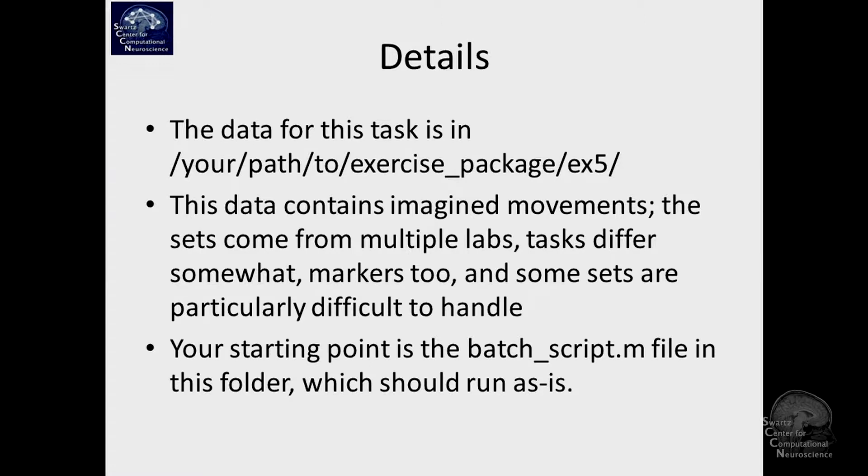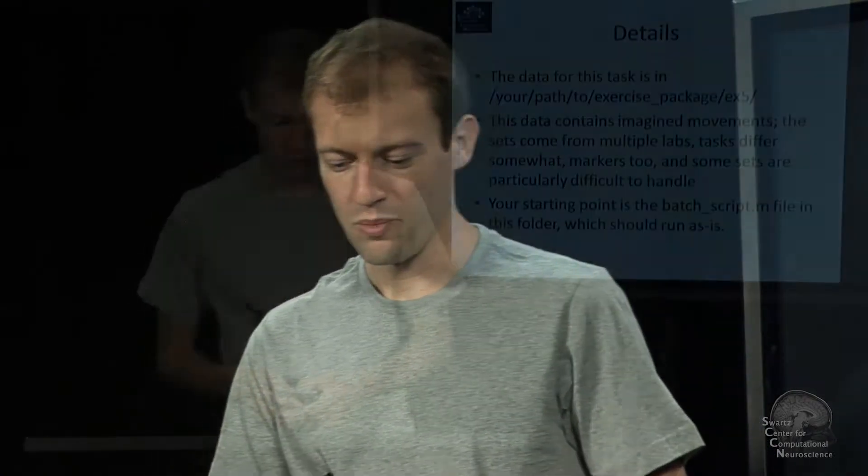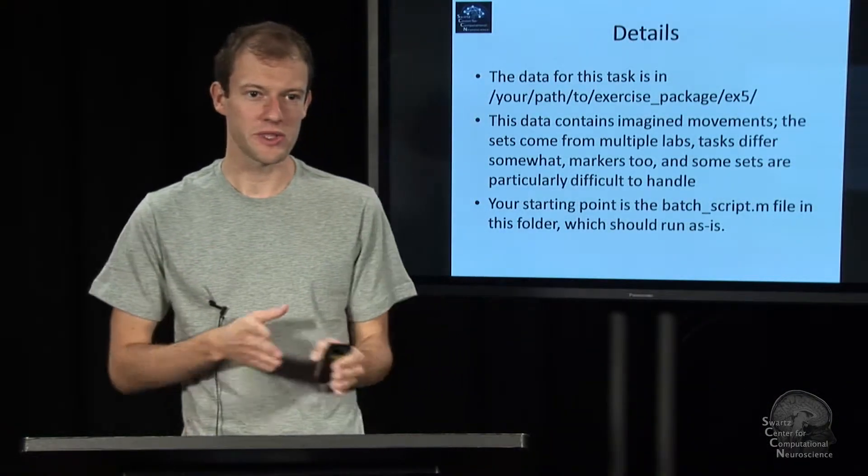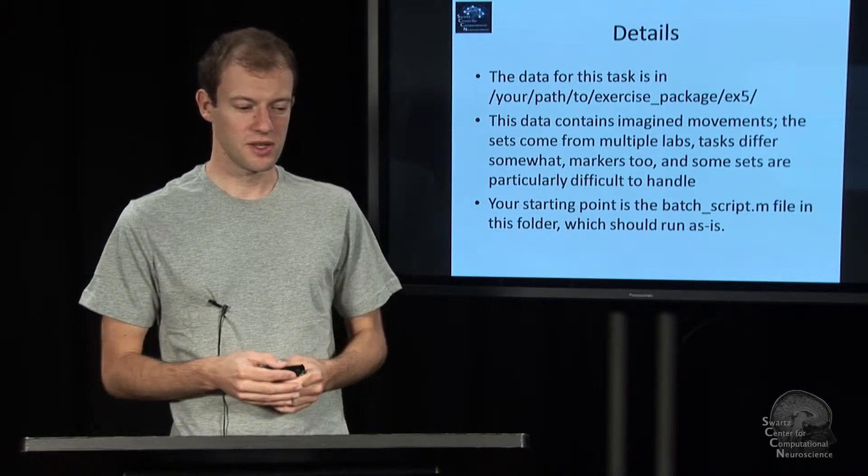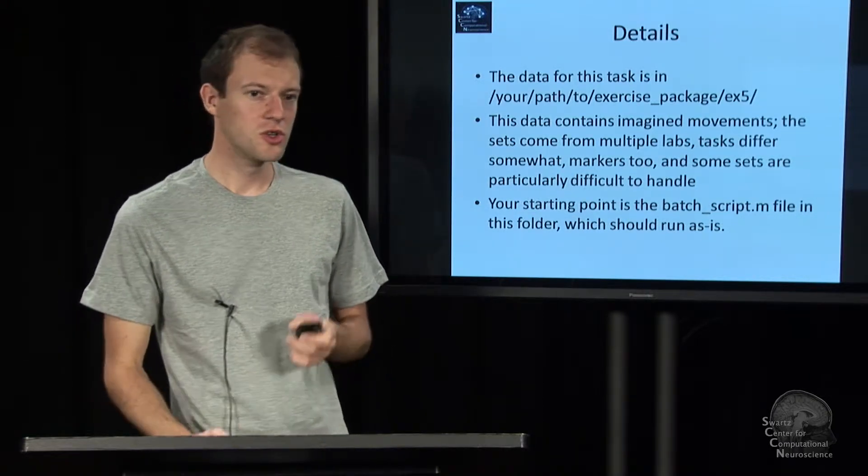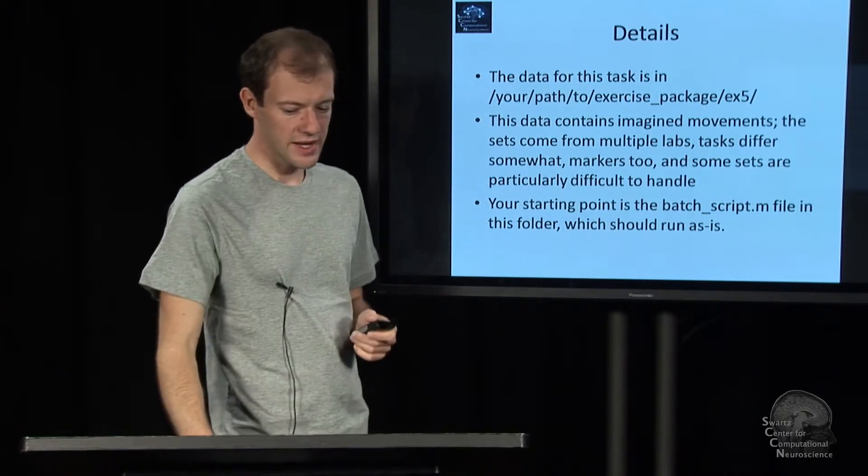And what it contains is, again, imagined movements, but this time the data comes from multiple labs. And the tasks that these different labs use are slight variations of the same story. So also the markers that are being used vary slightly. And furthermore, some of these data sets are actually rather pathological. So they are purposefully very few trials and so on, so it's hard to deal with that with certain kinds of methods.